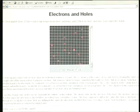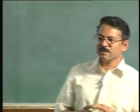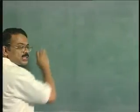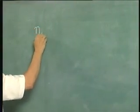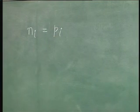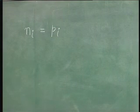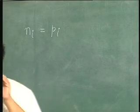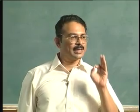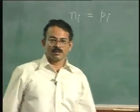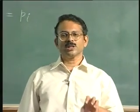Now let us come back to our discussion of the concentration of electrons and holes. We can write, based on our discussion, that in an intrinsic semiconductor Nᵢ is equal to Pᵢ — where P is the concentration of holes and N is the concentration of electrons. This equation reflects the fact that electrons and holes are generated in pairs and also recombine in pairs.